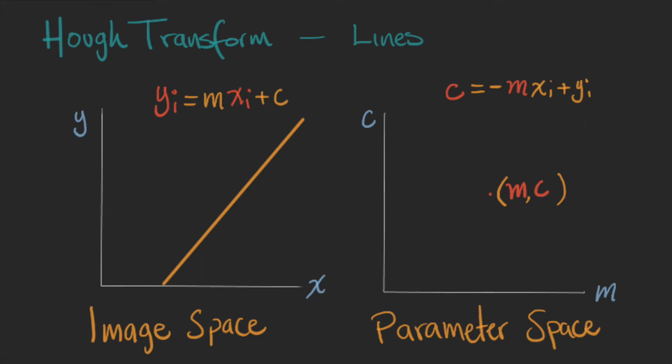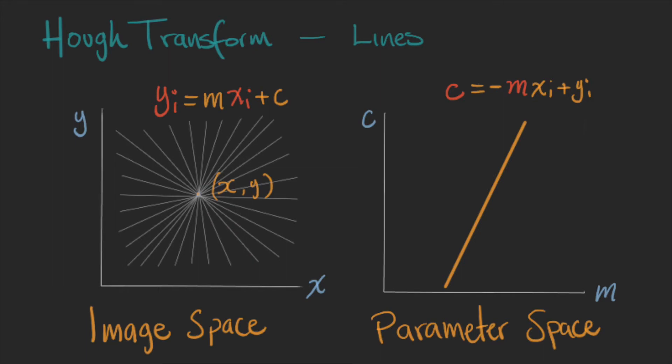Now, for a given point x,y in the image space we will see one line in the parameter space. This is because this line in the parameter space represents all the possible lines that cross the point x,y in the image space.